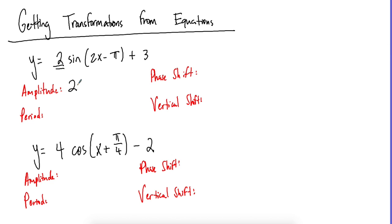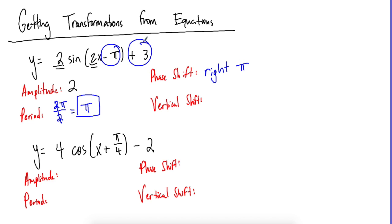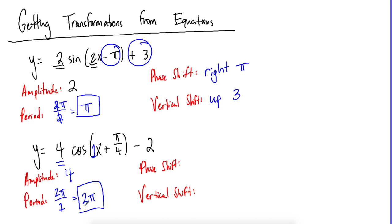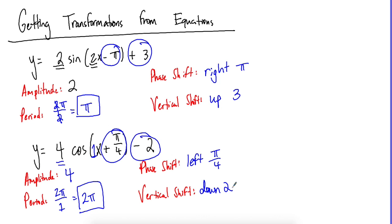Phase shift moves the graph left or right — it's always opposite the sign in the equation. Vertical shift moves the graph up or down. For example: amplitude 2, period = 2π/2 = π, phase shift is right π (opposite of the sign), vertical shift up 3. For another example: amplitude 4, period = 2π/1 = 2π, phase shift left π/4, vertical shift down 2.